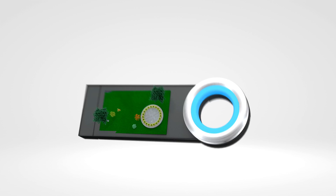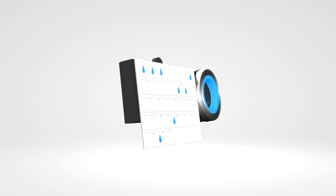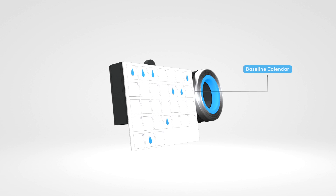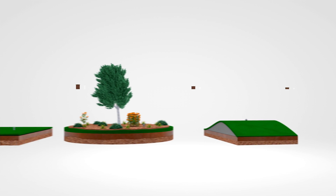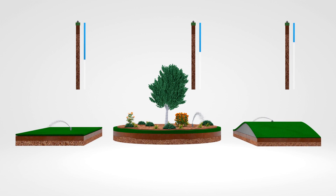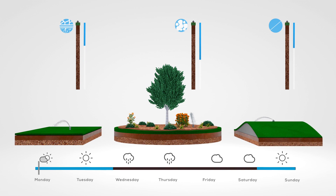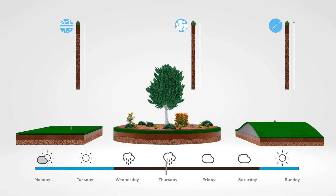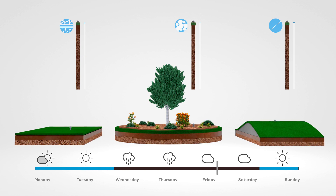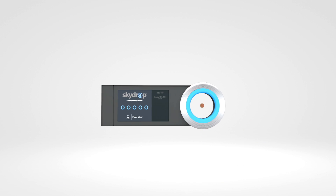Your SkyDrop controller knows the rate at which moisture both saturates and evaporates from the soil and creates a baseline. At first, you may notice that all of your zones will fully water. However, once SkyDrop has created a baseline, it will adjust watering programs based on the weather data it collects. Your SkyDrop system is a learning machine, and we think you're going to like having a pro on your side.